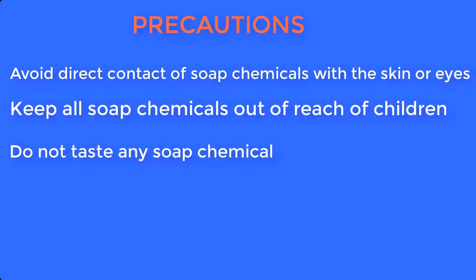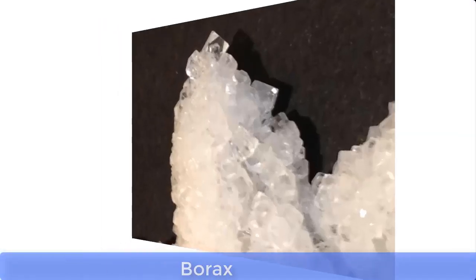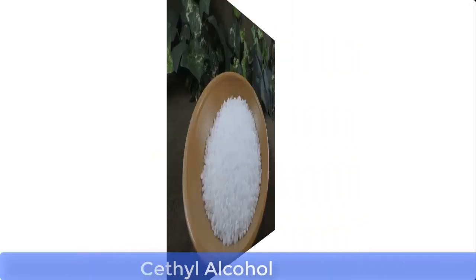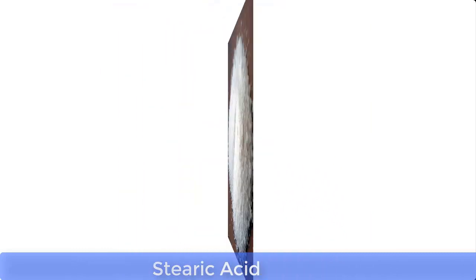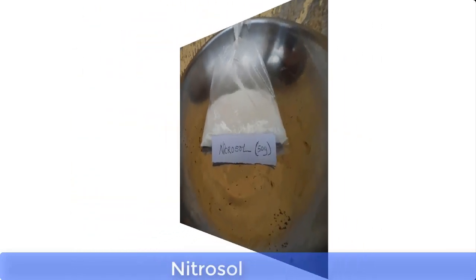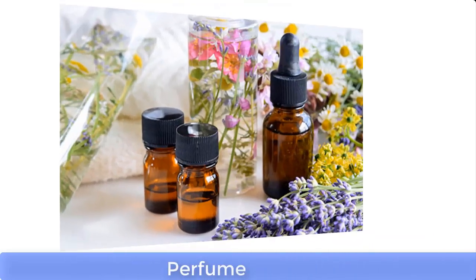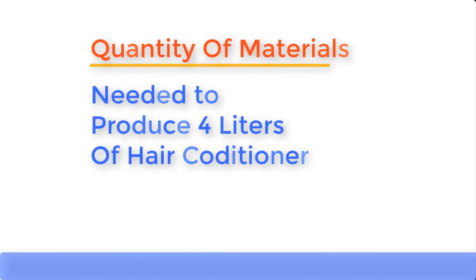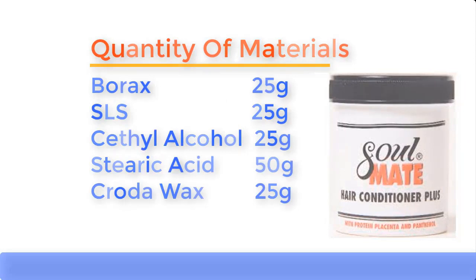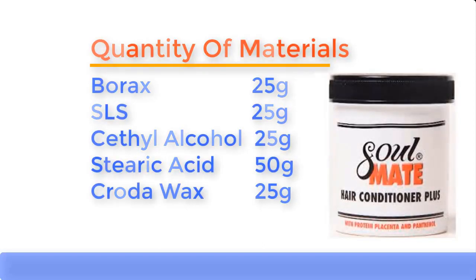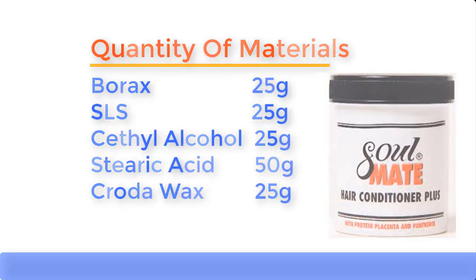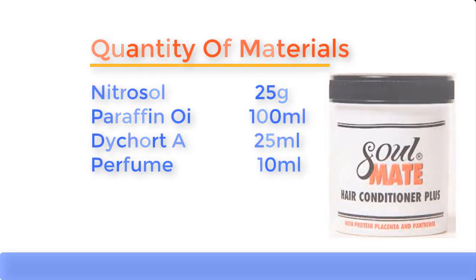These are the chemicals needed: borax, sodium lauryl sulfate (also known as SLS), cetyl alcohol, stearic acid, cruder wax, nitrosol, paraffin oil, dicot A, and perfume. To produce four liters of hair conditioner, you need: borax 25g, SLS 25g, cetyl alcohol 25g, stearic acid 50g, cruder wax 25g, nitrosol 25g, paraffin oil 100ml, dicot A 25ml, and perfume 10ml.